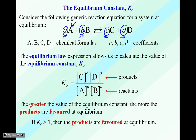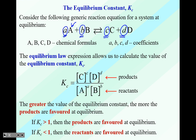Here's a summary: if the equilibrium constant is greater than one, then products are favored at equilibrium. If the answer is less than one, then the reactants are favored at equilibrium. This is a really important but simple concept — it's either a value greater than one or less than one.